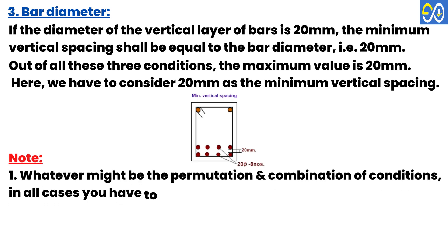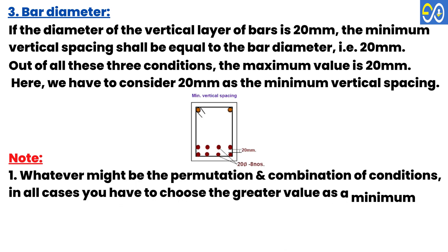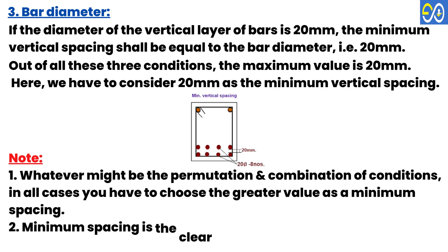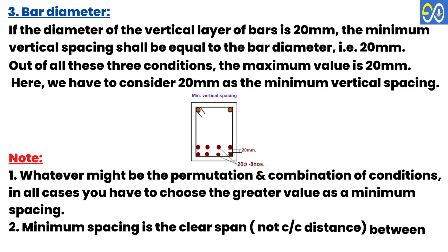Note: Whatever the permutation and combination of conditions, in all cases you must choose the greater value as the minimum spacing. Also, minimum spacing refers to the clear distance, not center-to-center distance, between the individual bars.